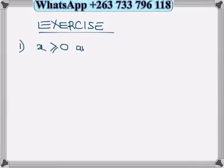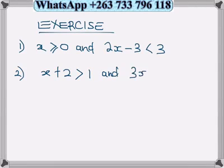A few things to do: x is greater than 0 and 2x minus 3 is less than 3. x plus 2 is greater than 1 and 3x minus 6 is less than or equal to 2x.